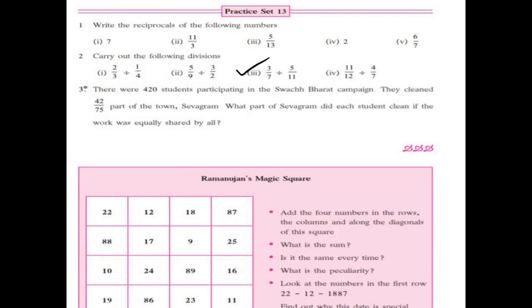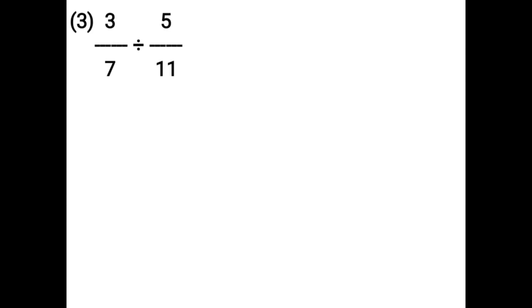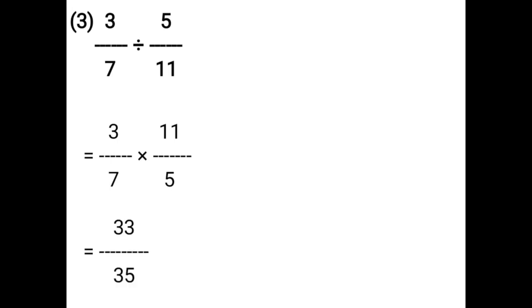3 upon 7 divided by 5 upon 11. Write the first fraction, 3 upon 7, as it is. Change division into multiplication. The second fraction, 5 upon 11, becomes its reciprocal: 5 upon 11 becomes 11 upon 5. Multiply numerator and denominator. That is equal to 33 upon 35.